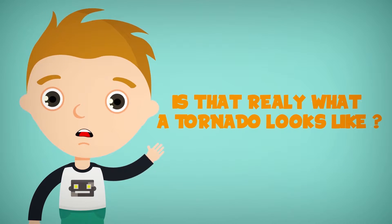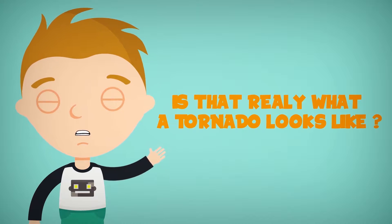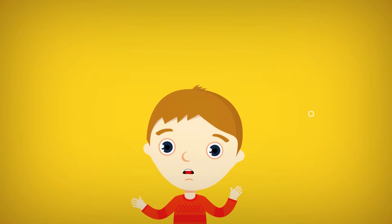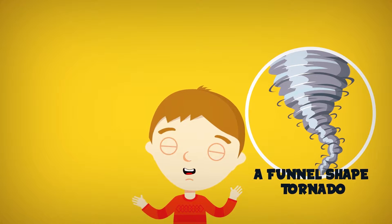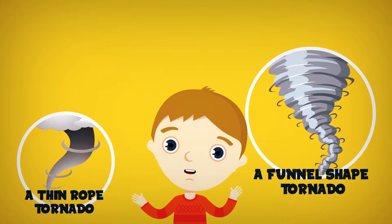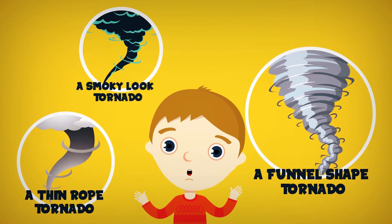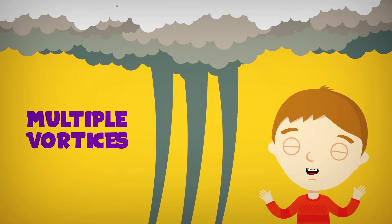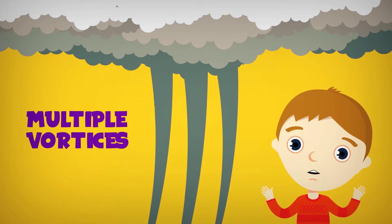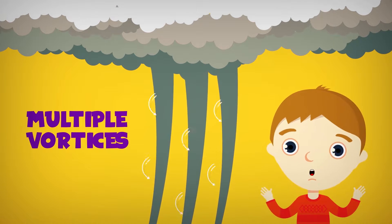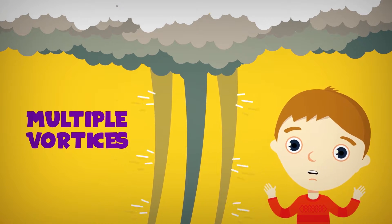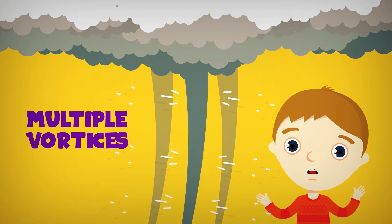Is that really what a tornado looks like? Tornadoes can appear as a funnel shape or in a thin rope-like shape. Some have a smoky look to them, and others contain multiple vortices, which are small individual tornadoes spinning around. Others may be nearly invisible, with swirling dust as the only way to see them happening.